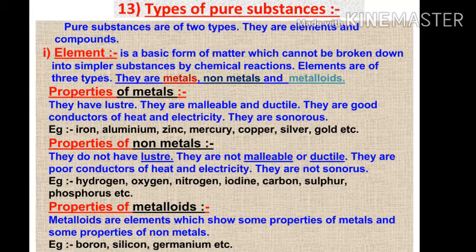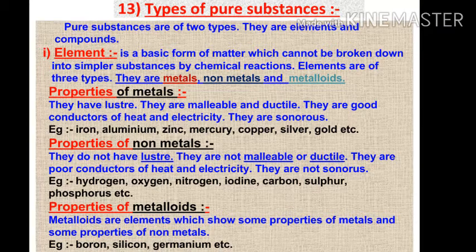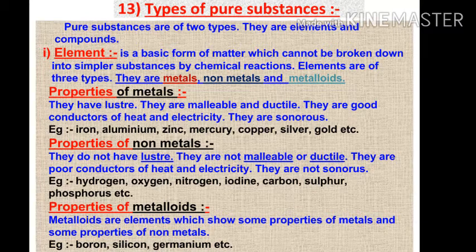On the basis of chemical composition, substances can be classified either as elements or compounds. Robert Boyle was the first scientist to use the term 'element' in 1661. Antoine Laurent Lavoisier, a French chemist (1743–94), was the first to establish an experimentally useful definition of an element. He defined an element as a basic form of matter that cannot be broken down into simpler substances by chemical reaction. Elements can be normally divided into metals, non-metals, and metalloids.